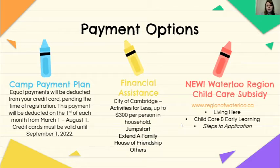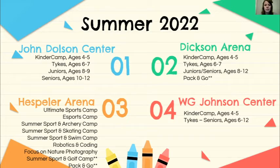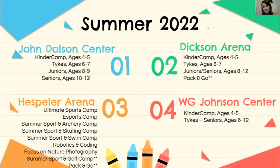We have six locations this summer. Our John Dolson Centre is in Galt off South Street, with four age groups: Kinder Camp, Tykes, Juniors, and Seniors. We have green space, blacktop space, and access to an indoor pool used for camp-only swims. Children age six and above swim three times per week. Unfortunately our four and five-year-olds don't swim due to City of Cambridge swimming guideline ratios — we simply don't have enough staff for proper ratios — so only our six to twelve-year-olds swim during camp swims.